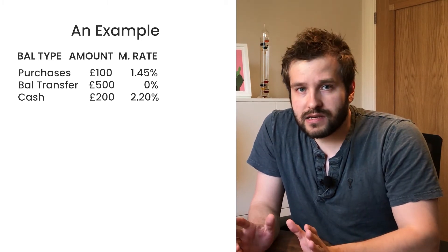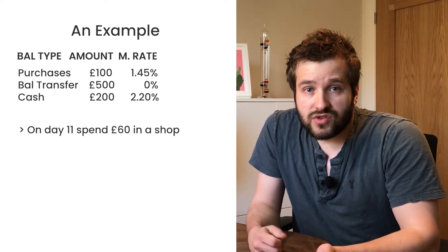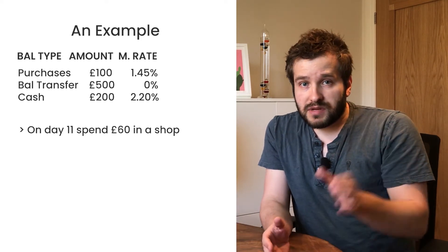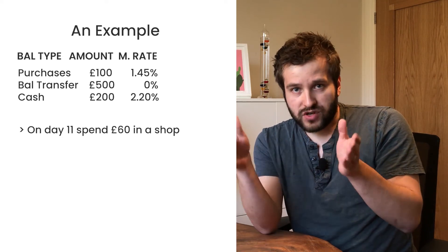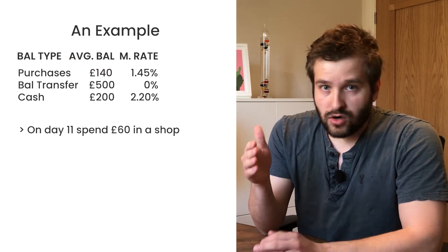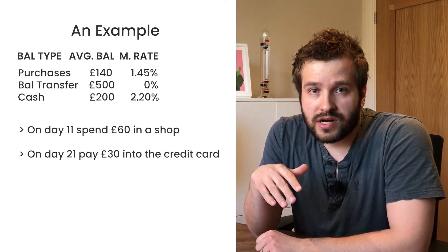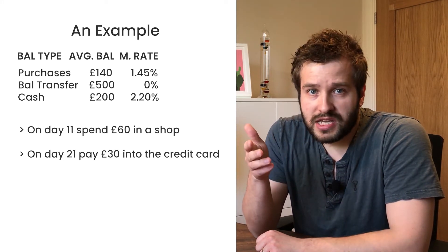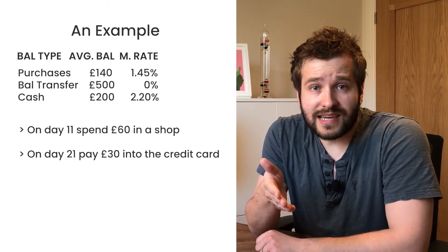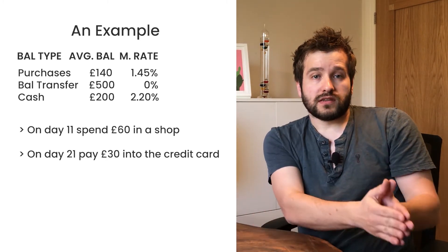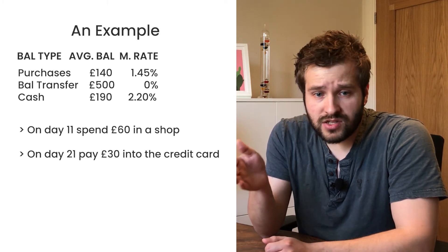To work out the average daily balance, let's add some complexity. Say after 10 days you spend an extra £60 in a shop, so your purchase balance goes from £100 to £160. That means the average daily balance is 10 days at £100 and 20 days at £160, giving an average daily balance of £140. For cash: you have a balance of £200, and after 20 days you make a payment. Payments in the UK — and generally in the US too — must repay the highest interest balance bucket first, which is cash. Let's say you paid £30 in, so cash goes from £200 down to £170 after day 20, giving an average daily balance for cash of £190.